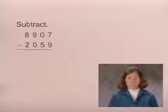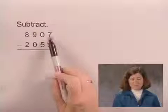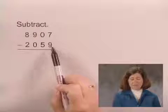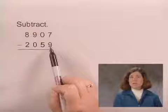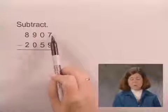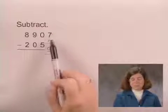We'll begin by subtracting ones. We want to subtract 7 minus 9, but in order to do that, we need to have more ones in the top number. We can't subtract 7 minus 9.